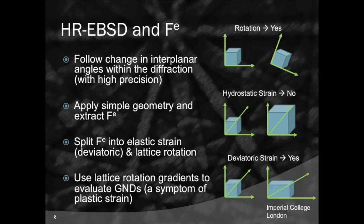We can measure the deviatoric strains — effectively the change in interplanar angles — by tracking how zone axes change shape as the object moves. We can think about the elastic strain in terms of the deviatoric elastic strain plus the lattice rotation. We can use lattice rotation gradients to compute the GND density, which in some cases is a symptom of the plastic strain.